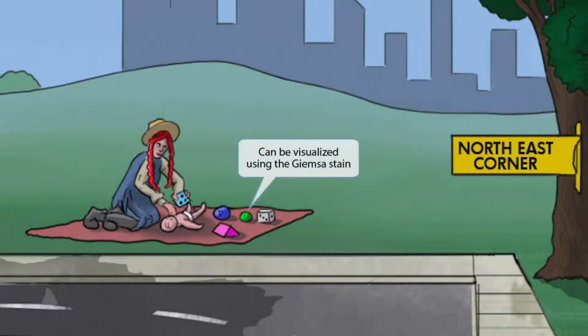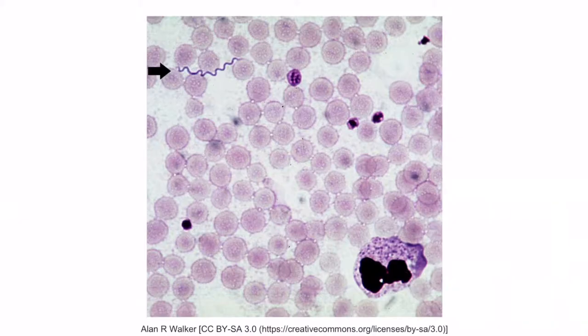Notice that we've also shown Anne trying to entertain the baby with some games. Games sounds like Giemsa, so we've included this here to help you remember that Borrelia can be visualized using the Giemsa stain. This is a stain that uses aniline dyes and is very similar to another stain called the Wright stain. This is an image of a Giemsa stain of Borrelia, and as you can see, the organism is shown right here.